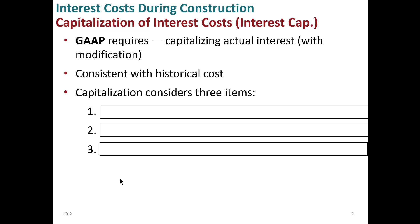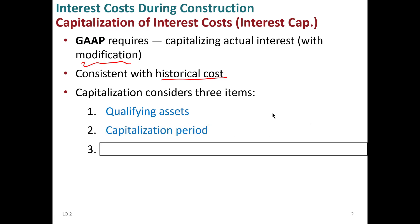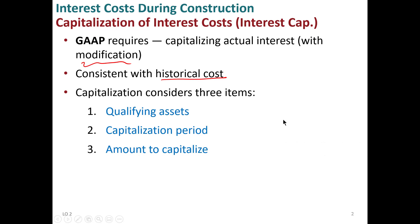What are these qualifiers or modifications, as FASB likes to call them? Similar to the historical cost principle, we can capitalize expenditures — anything it takes to get an asset into place — but we need to consider three hurdles. First, what is a qualifying asset? Second, over what period do we capitalize interest? Third, how much of the interest do we capitalize? There are a few rules there that tend to cause people some frustration.